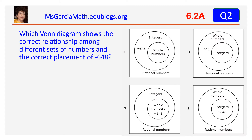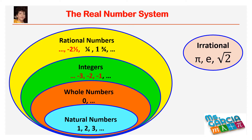Which Venn diagram shows the correct relationship among different sets of numbers and the correct placement of negative 648? This Venn diagram shows some examples of the real numbers.